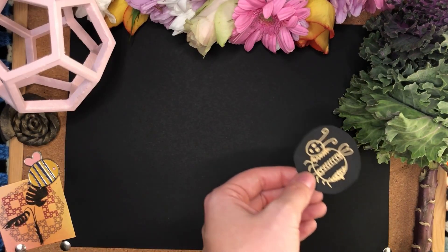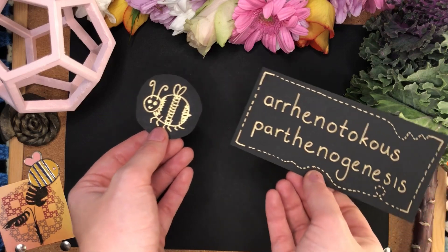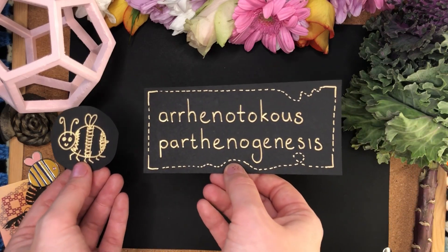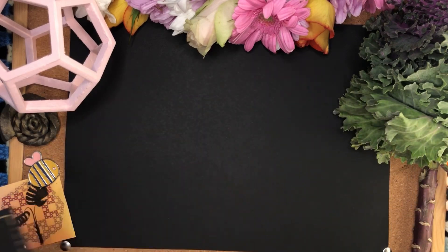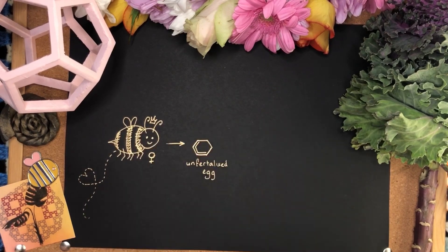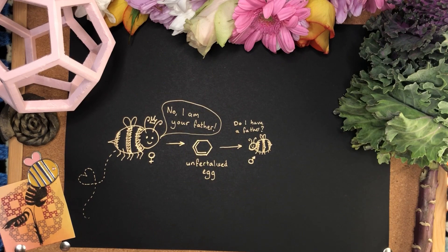Male bees are born through a process called parthenogenesis — a female lays an unfertilized egg and a male is born. So male bees have no father, and as a result, their family tree looks like this.